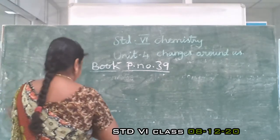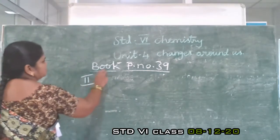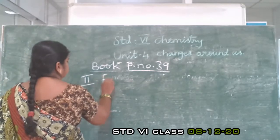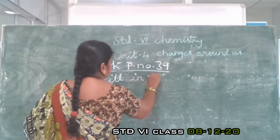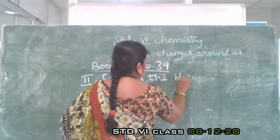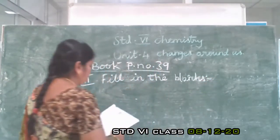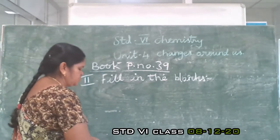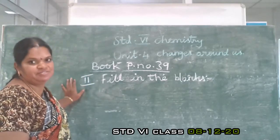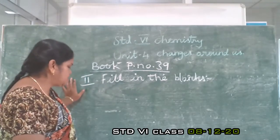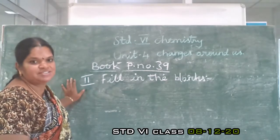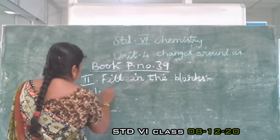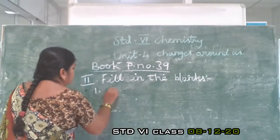Second division, same book page number 39. Fill in the blanks. First question: Magnet attracts an iron needle. This is a dash change. Two options are given — reversible change or irreversible change. Which one is correct? Reversible change. Put the tick mark near reversible change.